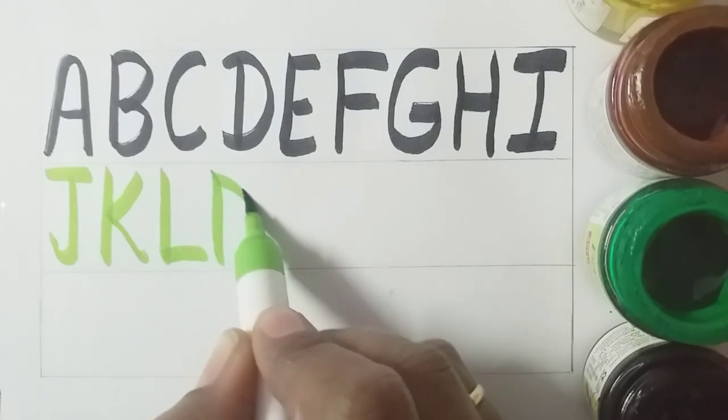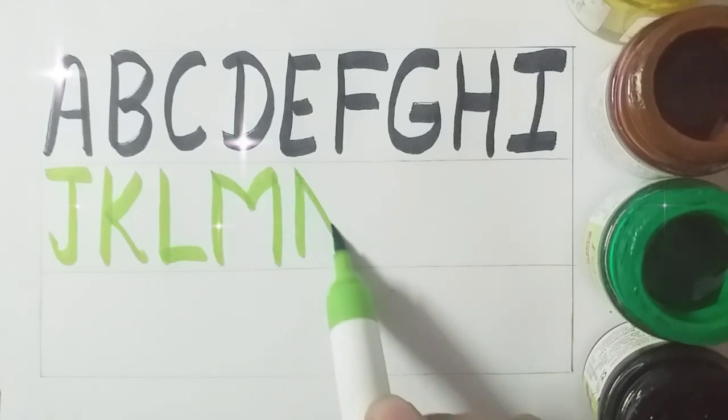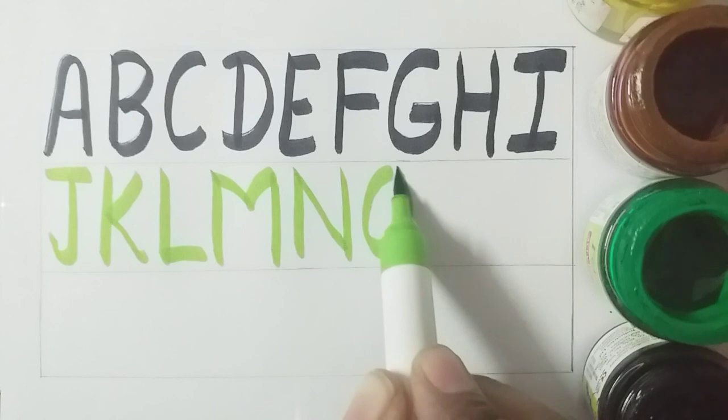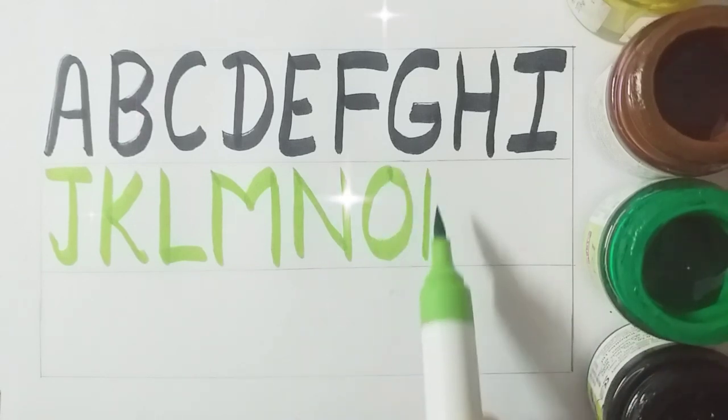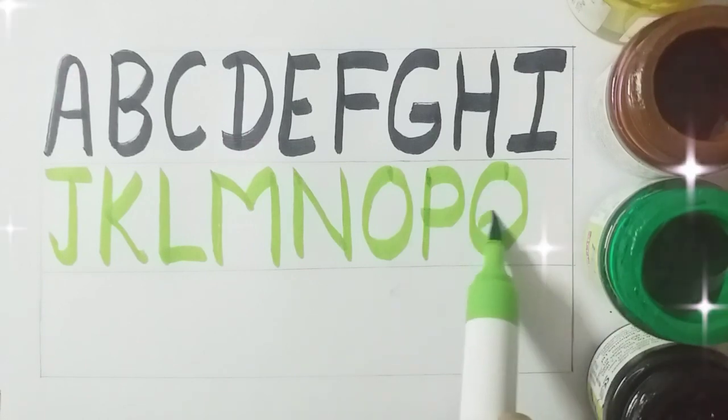M, M for monkey. N, N for nest. O, O for owl. P, P for parrot. Q, Q for quill.